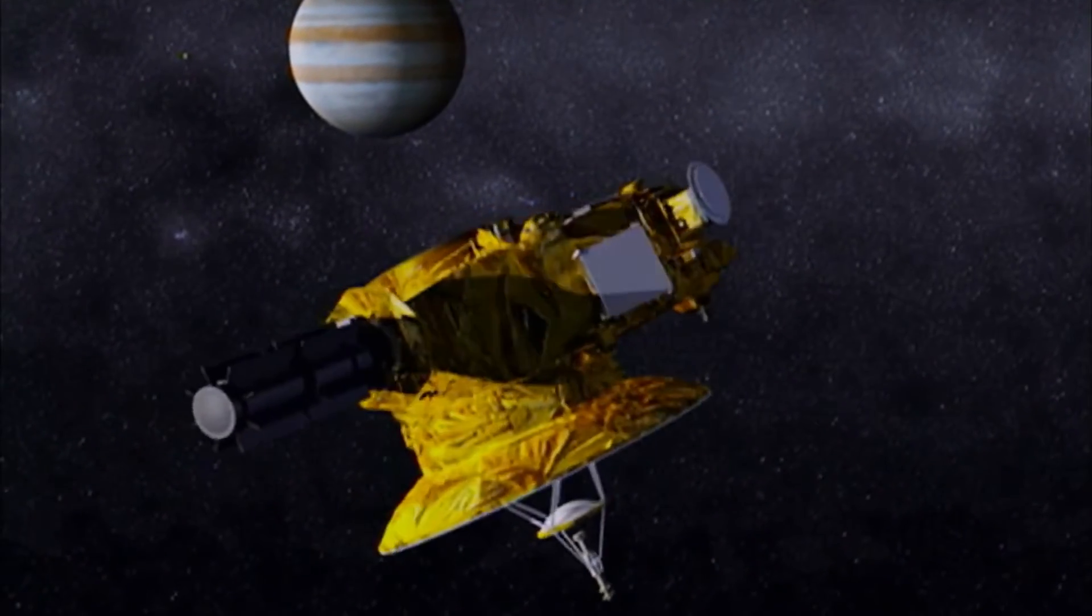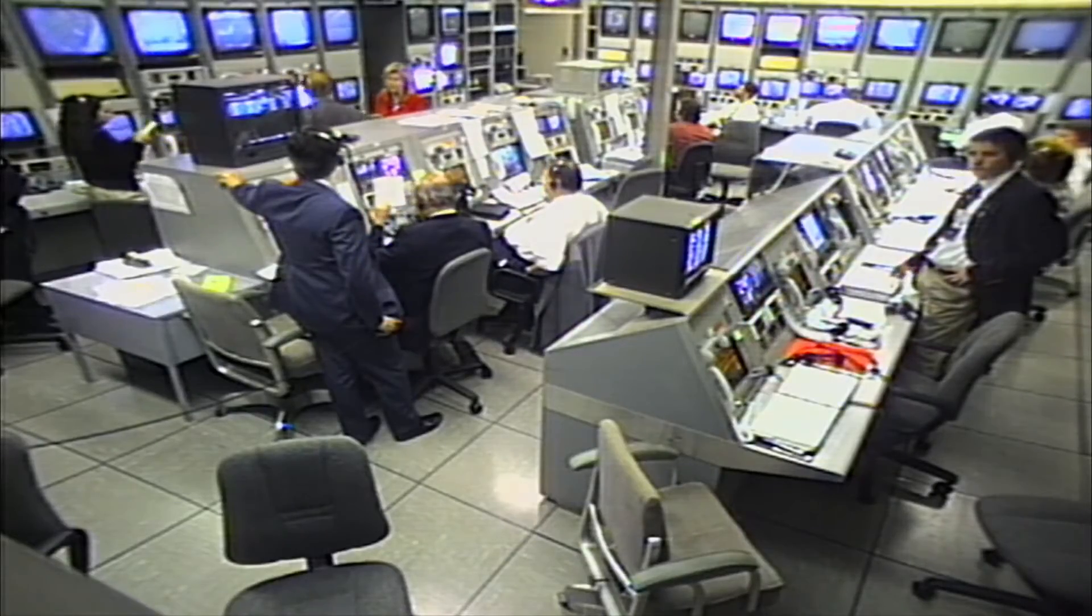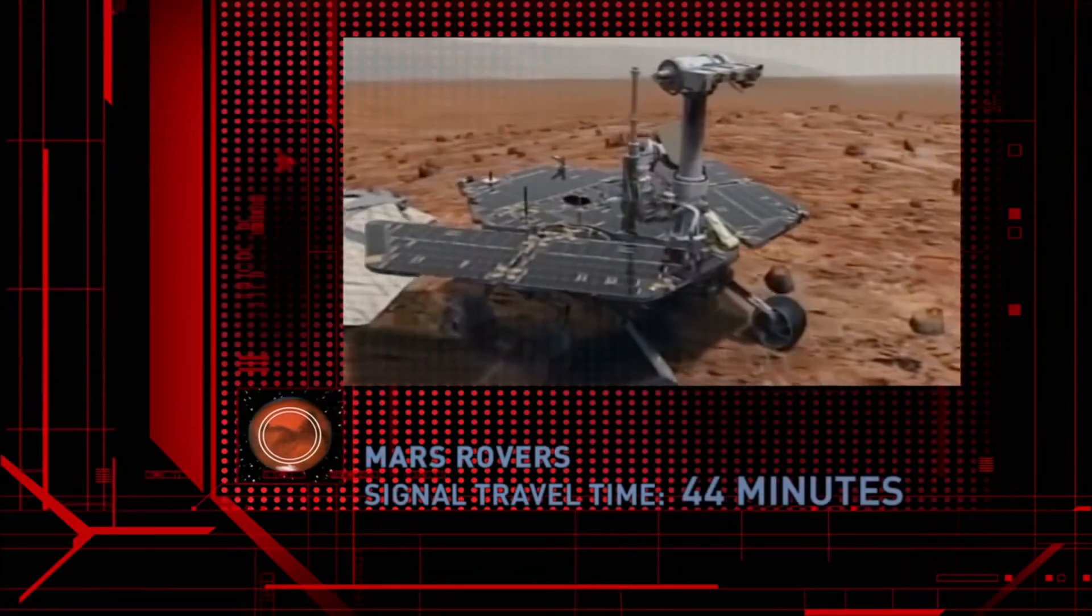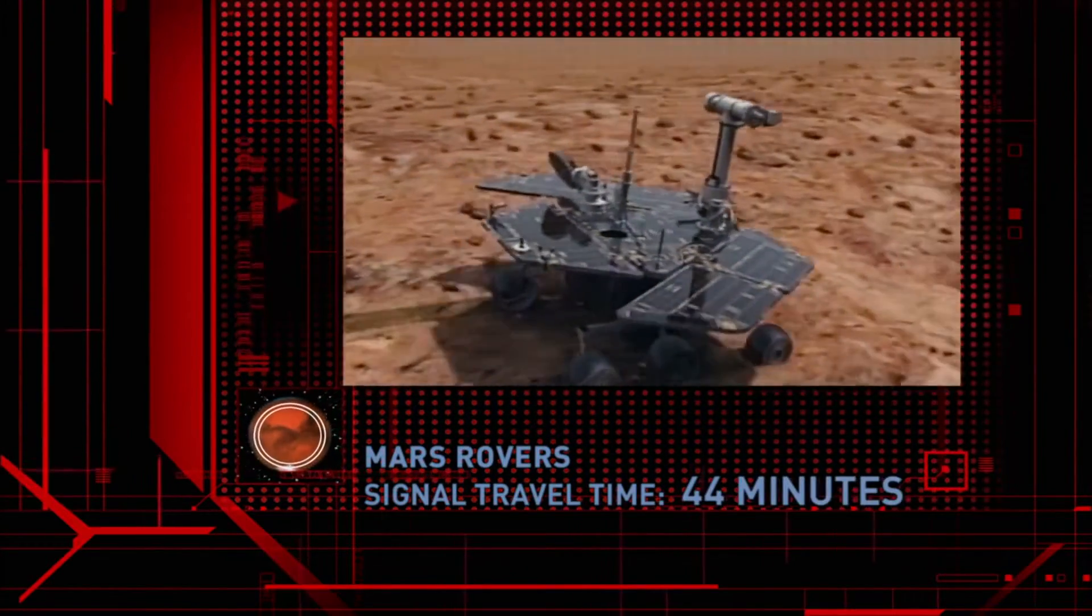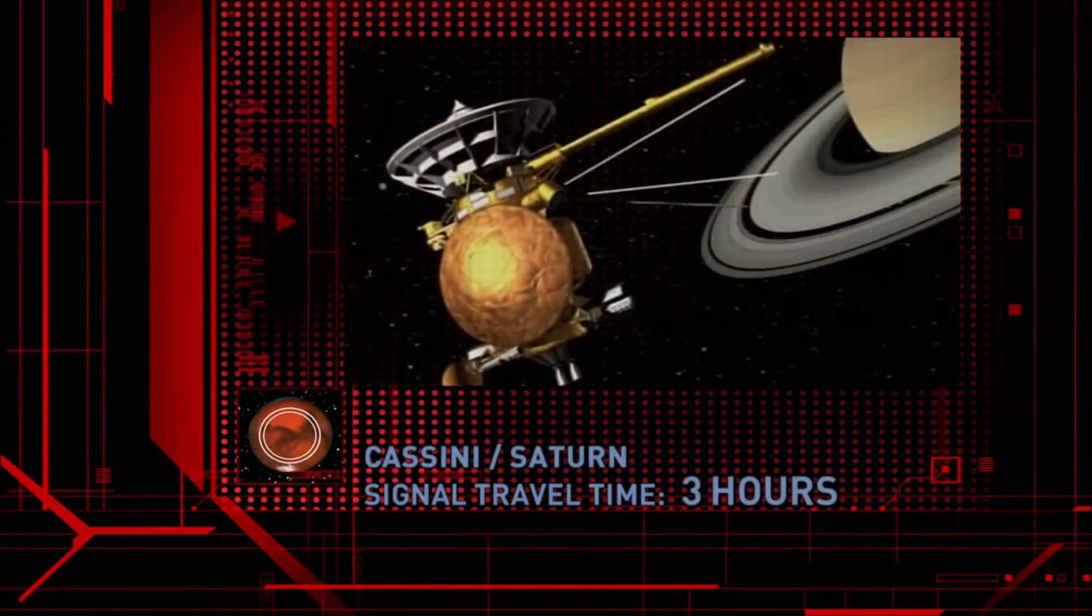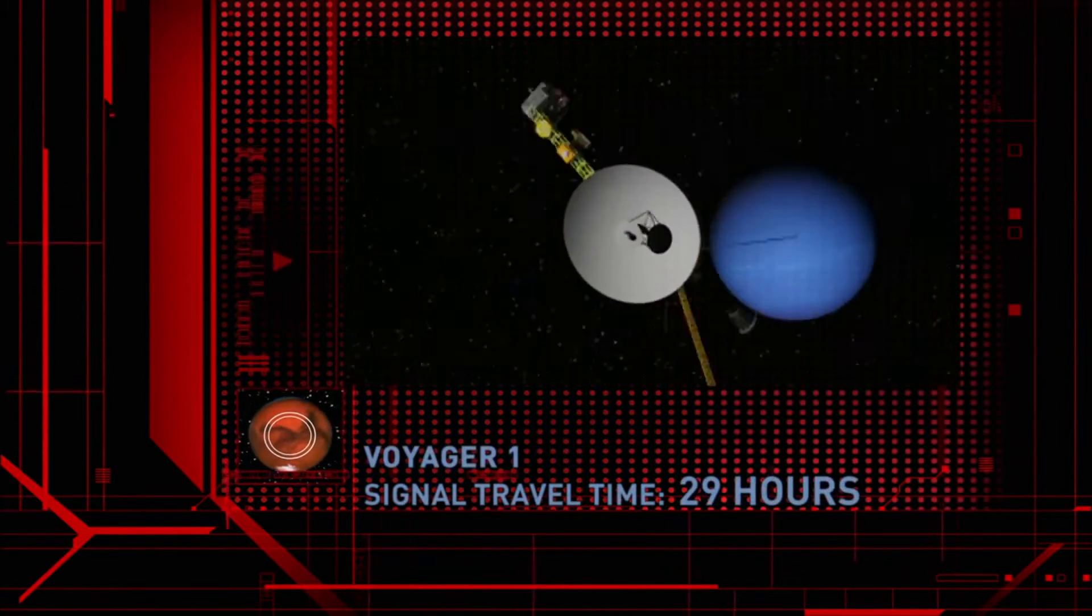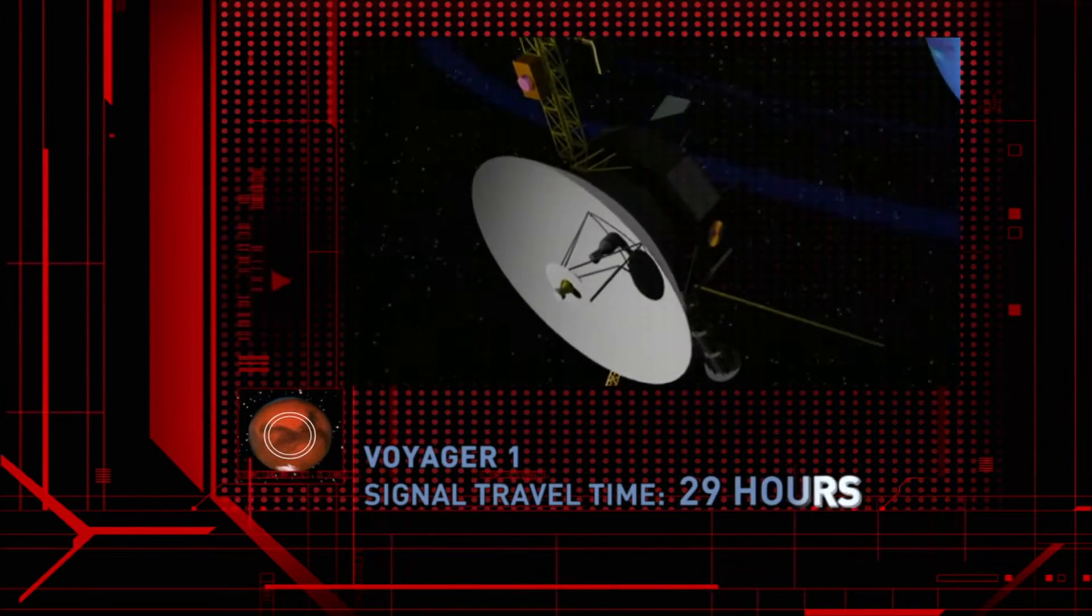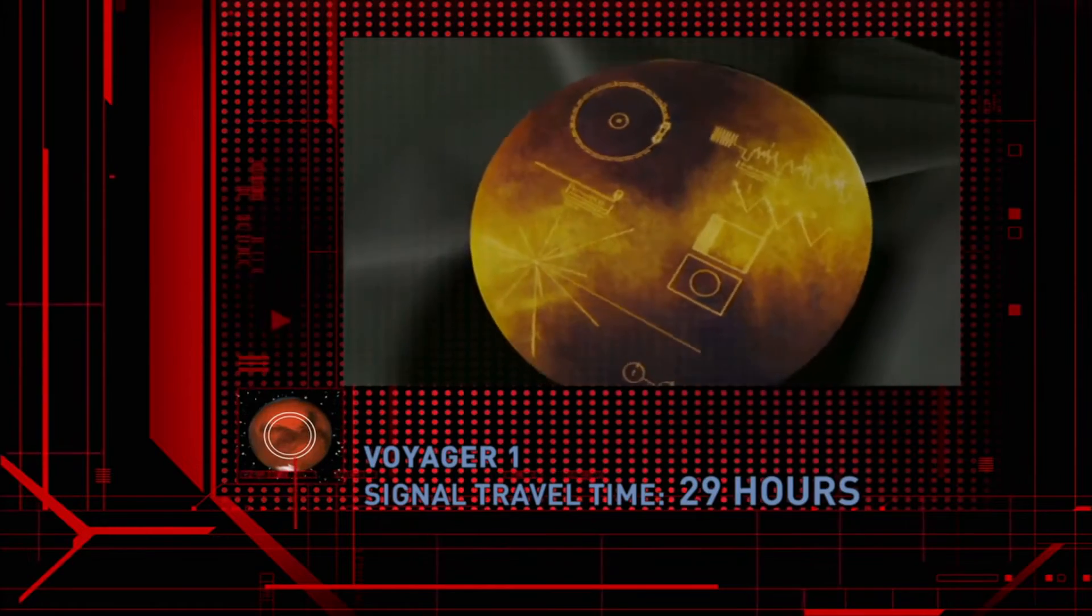The limits of light speed also make communicating with Earth's far-flung spacecraft a special challenge. It takes up to 44 minutes for signals to travel back and forth to the probes exploring Mars. More than three hours to Cassini at Saturn. And over 29 hours to Voyager 1, the most distant of all, now heading out of the solar system.